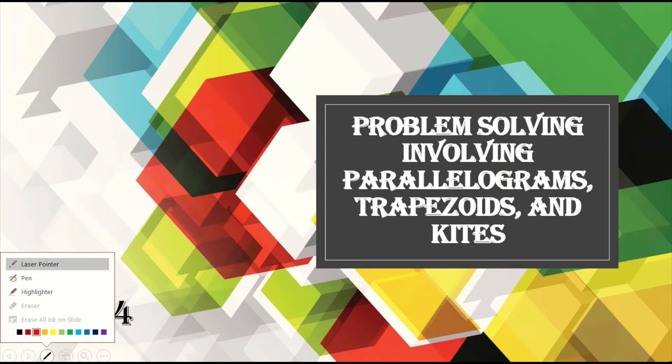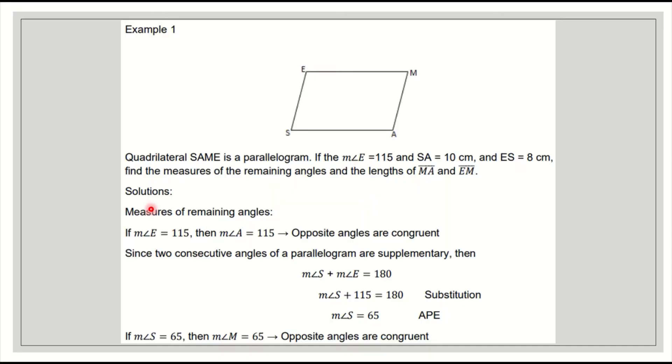Okay, so we are now on quarter three, week four of our discussion, and the topic is all about problem solving involving parallelograms, trapezoids, and kites. Example number one: Quadrilateral SAME is a parallelogram. If the measure of angle E is 115 and SA is 10 centimeters and ES is 8 centimeters, find the measure of the remaining angles and the length of MA and EM.